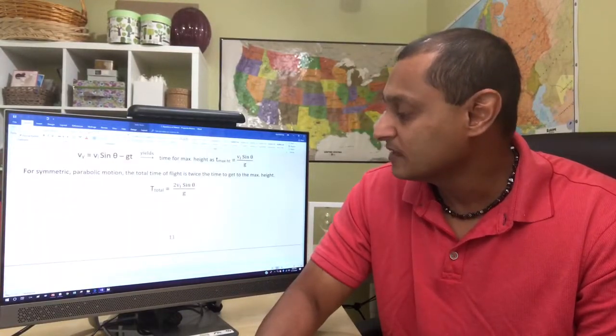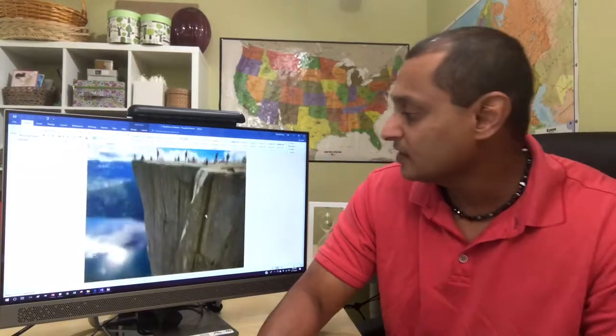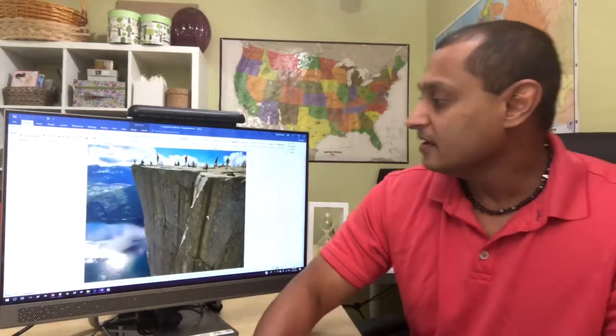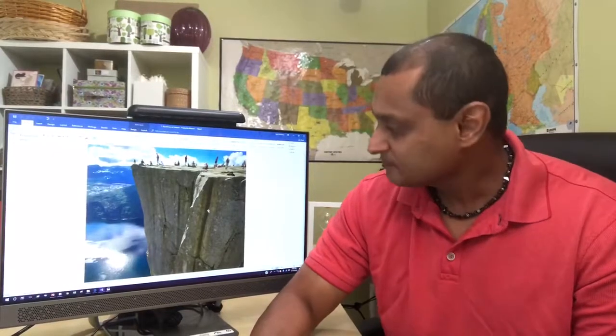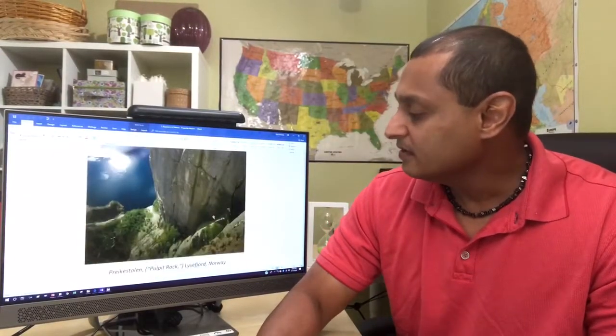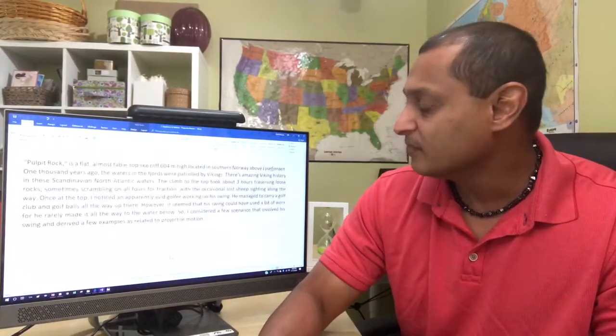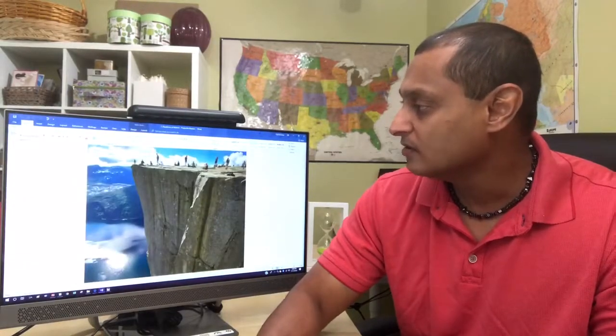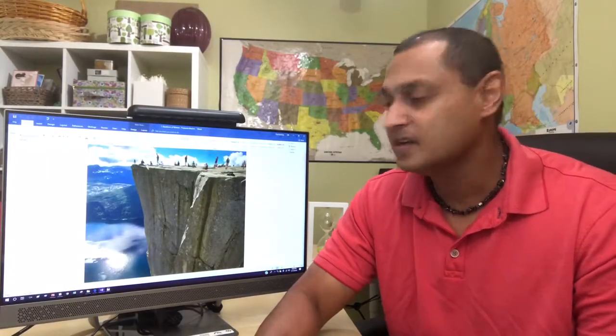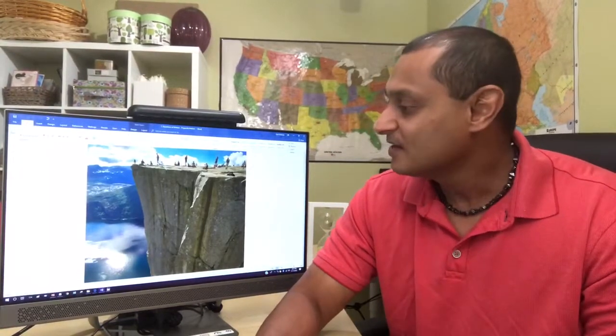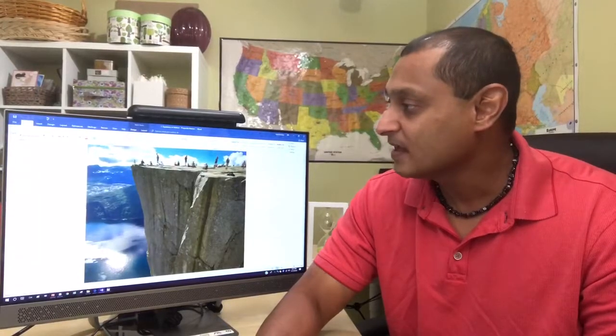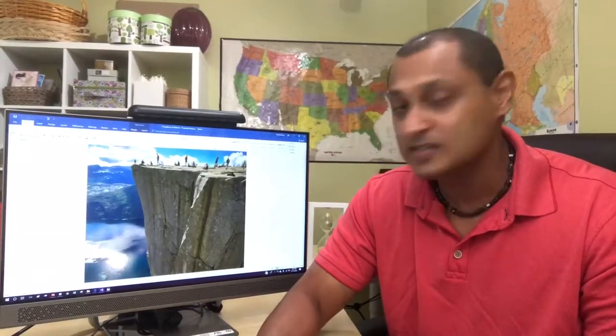As we scroll down, all kinds of things are derived. Here is southern Norway, Lisa Fjord, Pulpit Rock. And, we will work on an example of launching a golf ball. On one of my trips here, there's actually a guy standing on the top of Pulpit Rock, which is thousands of feet high, launching a golf ball as a projectile into these waters here.